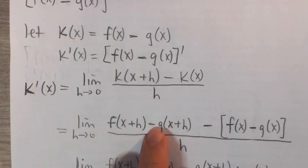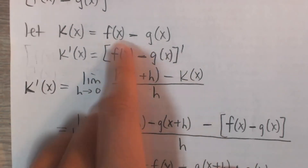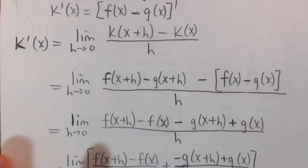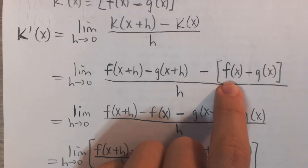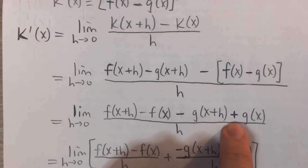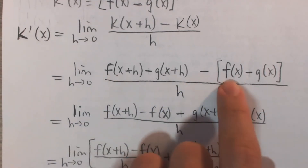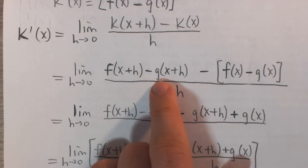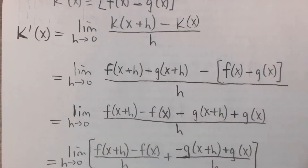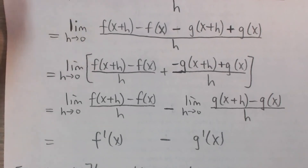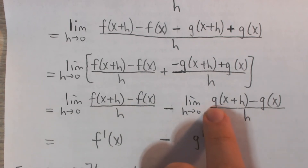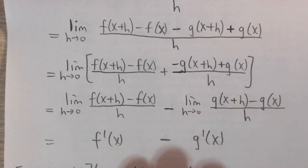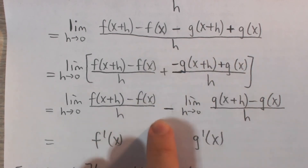Now k of x plus h has a minus sign instead of a plus sign. k of x by definition is f of x minus g of x. Applying the outer minus sign: we get negative f of x, and the double negative gives positive g of x. So we have f of x plus h minus f of x, and then negative g of x plus h plus g of x. To form the derivative of g properly, I'll factor out a negative from those terms to get g of x plus h minus g of x.